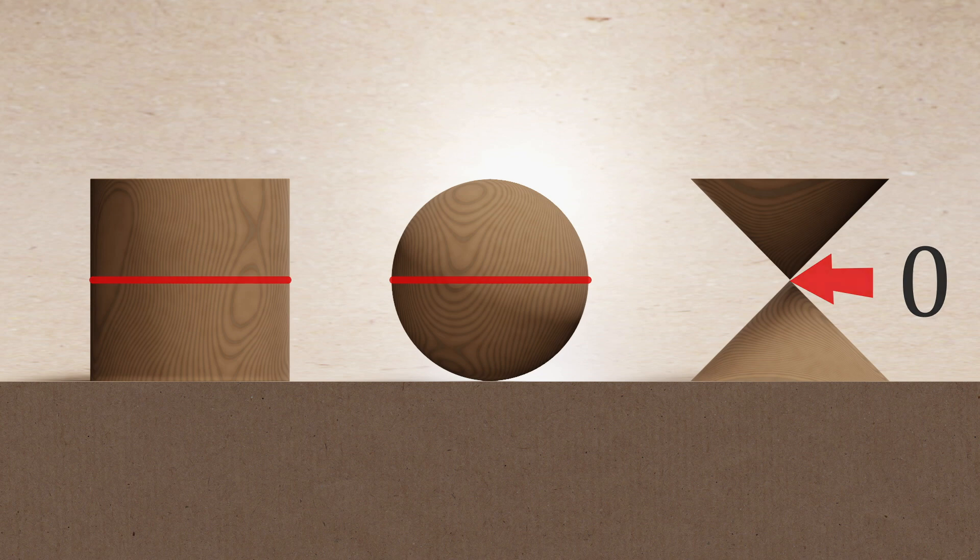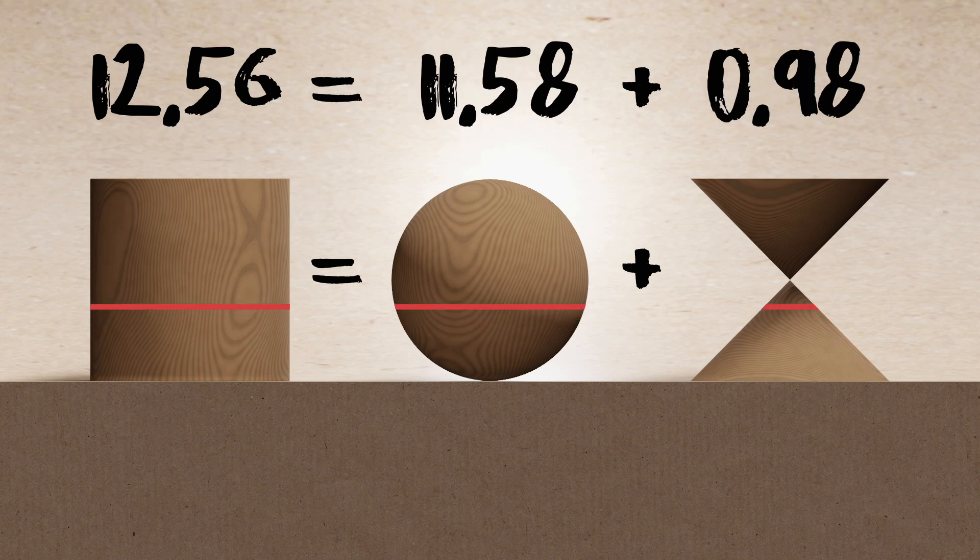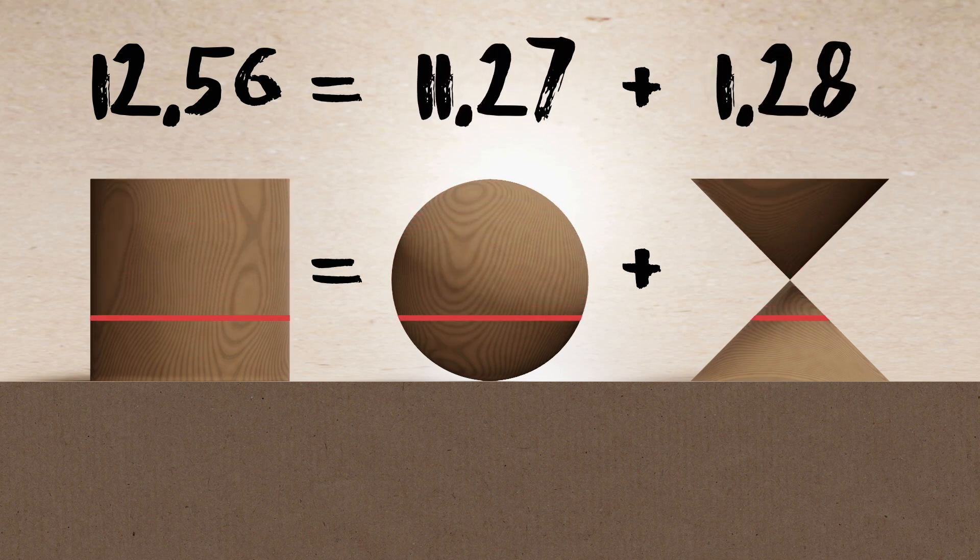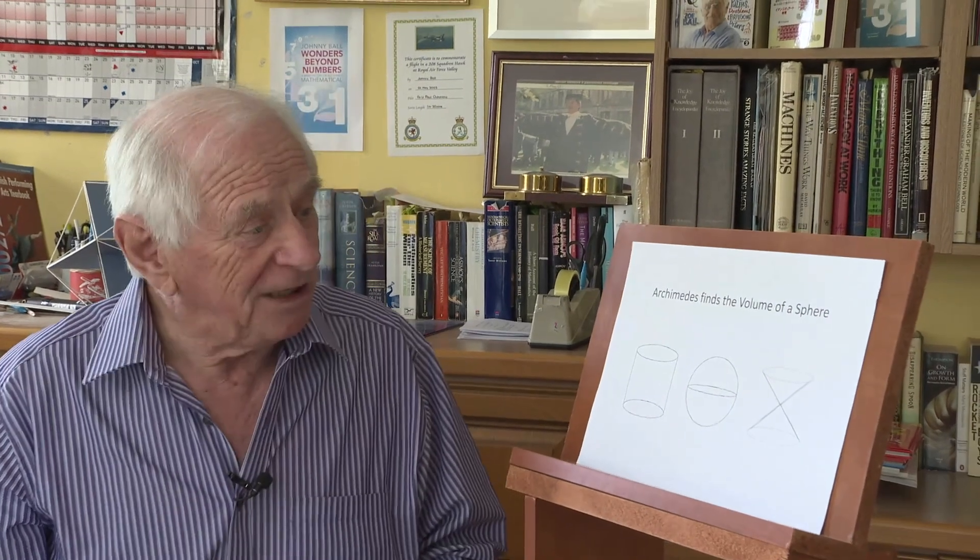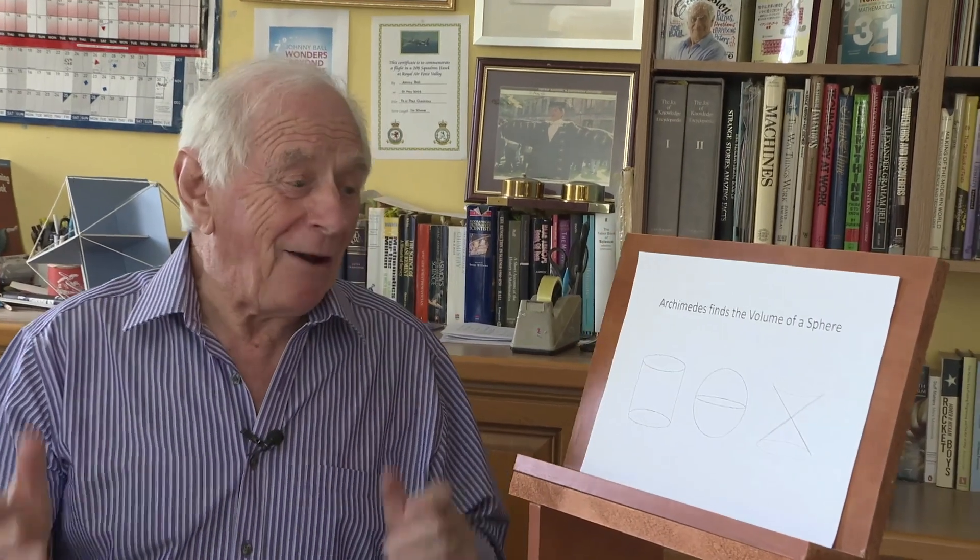Does that mean that if I take any horizontal line through the three figures, then the cross section of that will equal the cross section of that plus the cross section of that every single time? And he said, I bet it does. But how could he prove it?